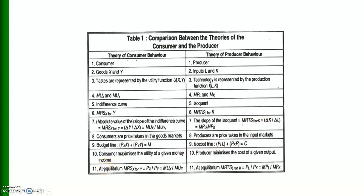In equilibrium in consumer behavior, the marginal rate of substitution of X for Y equals the ratio of price of X to price of Y, which equals marginal utility of X divided by marginal utility of Y. In production theory, at equilibrium, the marginal rate of technical substitution of labor for capital equals the wage rate divided by the rate of interest, which equals marginal productivity of labor divided by marginal productivity of capital.